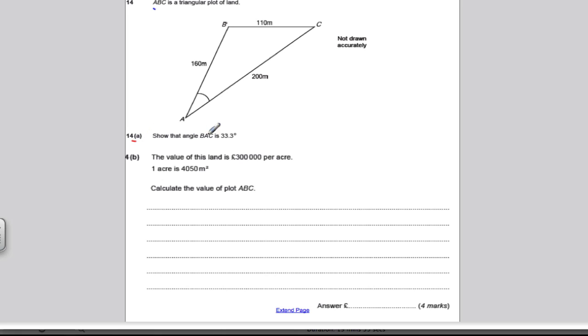Now part A said that show this angle was 33.3. I'm not going to do this here. I've done that in the non-right-angled triangle trigonometry video, so look there if you're not sure. This is the question I want to focus on here. It tells us that the value of land is 300,000 pounds per acre, one acre is 4,050 meters squared. Calculate the value of the plot ABC.